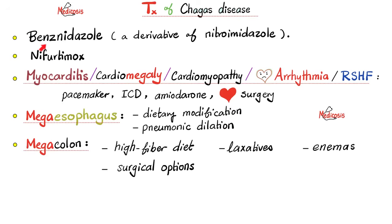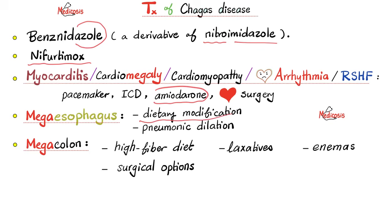How can we treat Chagas disease? We have benznidazole, a derivative of nitroimidazole — when a drug ends in 'azole,' it's typically an imidazole derivative. The older medication is nifurtimox. If the patient has heart disease, we can try a pacemaker, an implantable cardioverter-defibrillator, or the antiarrhythmic amiodarone. If all else fails, heart surgery. For megaesophagus: dietary modifications, then pneumatic dilation when needed. For megacolon: high-fiber diet, laxatives, enemas, and surgery when everything fails.